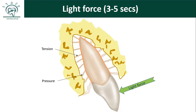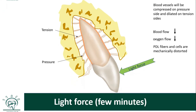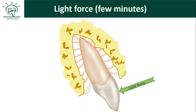Compression of blood vessels results in reduction of blood flow, causing hypoxia. Simultaneously, the force damages a few cells and collagen, and this mechanical distortion results in release of prostaglandins and leukotrienes. All cells have a cell membrane made of phospholipids, and when the cell membrane is damaged it releases arachidonic acid. Through the cyclooxygenase pathway, prostaglandins are formed, and through the lipoxygenase pathway, leukotrienes are formed.